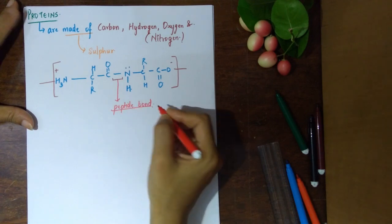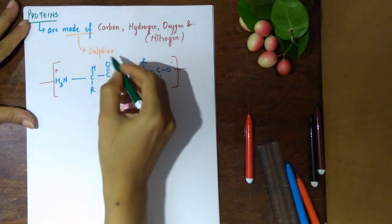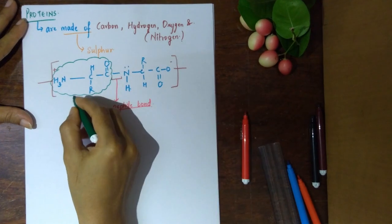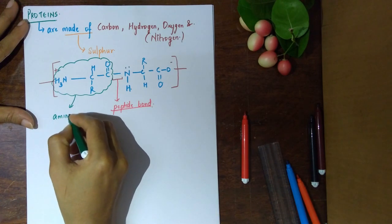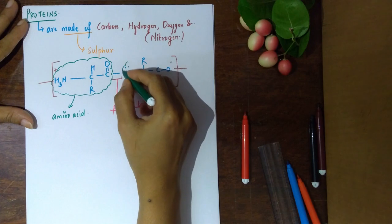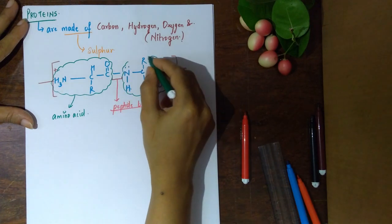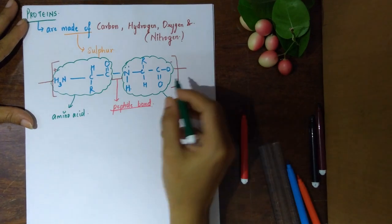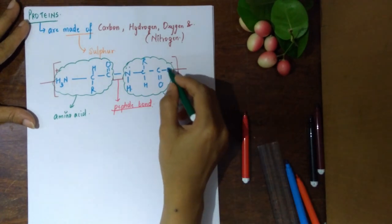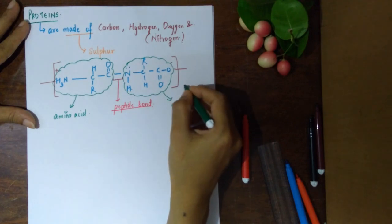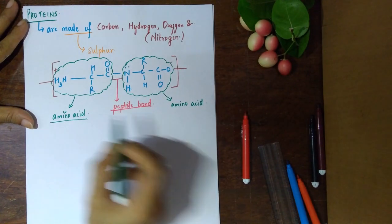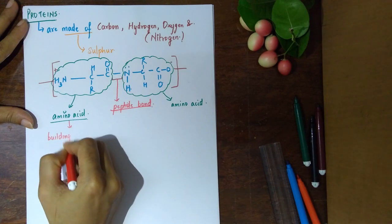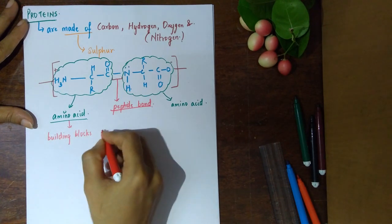Now what does the peptide bond have to do with proteins? The first structure you see is called an amino acid, and the second structure in the second bubble is the second amino acid. There can be multiple linkages of amino acids. Amino acids are the building blocks of proteins.